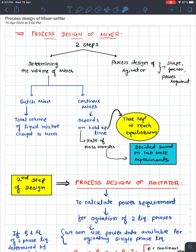We have two types of mixers: batch mixer and continuous mixer. For a batch mixer, volume is easy to predict — the total volume of the liquid mixture charged (feed F plus solvent S) gives us the volume. For a continuous mixer, feed and solvent continuously enter and exit into the settler, so volume depends on the hold-up time.